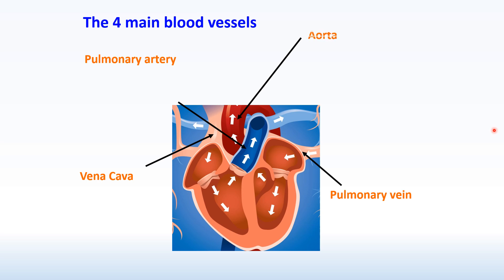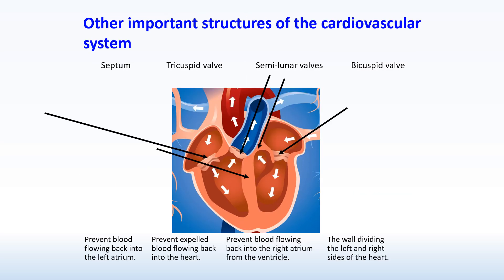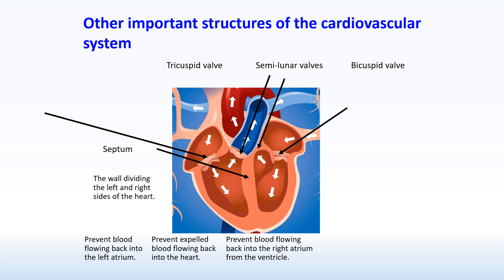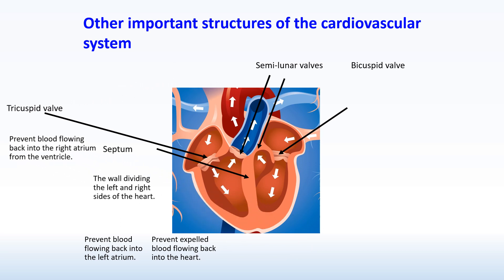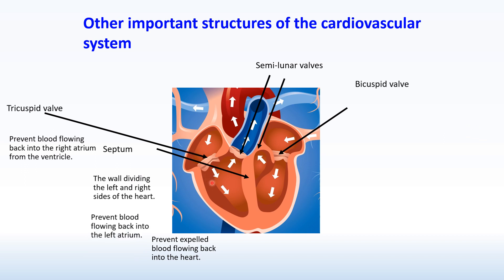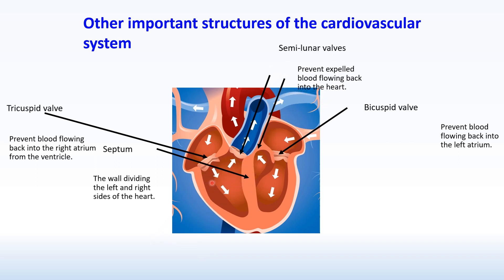The four main blood vessels of the heart are the vena cava, the pulmonary artery, the aorta, and the pulmonary vein. Veins bring blood back to the heart; arteries take blood away from the heart. Other important structures include the septum, which is the wall in the middle of the heart separating oxygenated and deoxygenated blood; the tricuspid valve, which separates the right atrium and right ventricle; the bicuspid valve, which separates the left atrium and left ventricle; and the semilunar valves, where the ventricles contract forcing blood away from the heart.